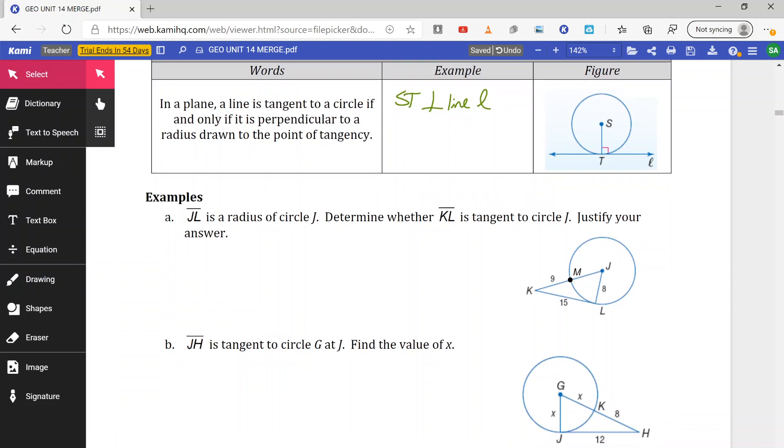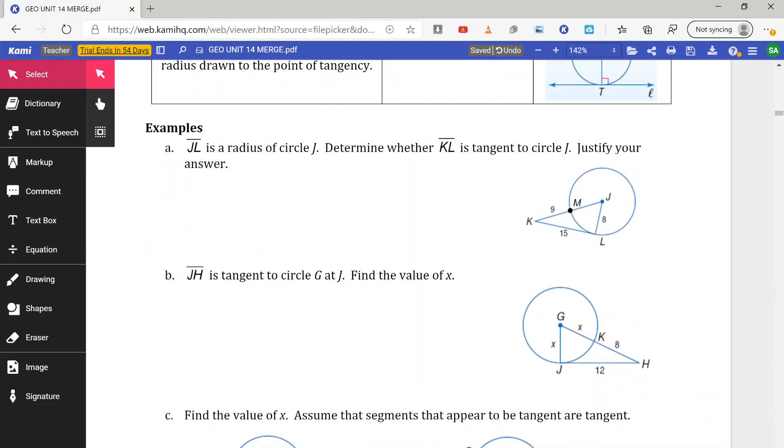Now what does it look like mathematically? Well, here we have J-L is radius of circle J. Determine if K-L is tangent to circle J, justify your answer. So here we're given K-M is 9, J-L is 8, K-L is 15. So we know the radius itself is 8. So J-L is 8, that means J-M is also 8.